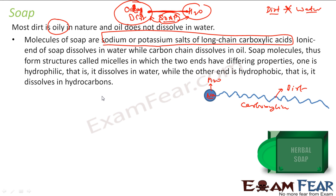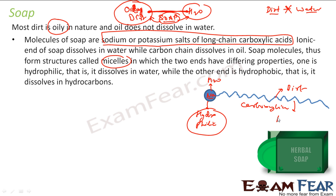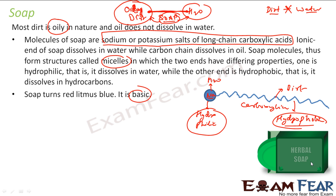The long chain takes care of dirt — this part dissolves in dirt. It forms a structure called micelles, which I'll explain when I explain the working of soap. If you see this molecule, it has two ends. One end is attracted towards water — we can call it hydrophilic, meaning the one that loves water. The other end is hydrophobic — it hates water. Hydrophobic means fear of water, hydrophilic means love of water. So the hydrophobic end dissolves in hydrocarbons, i.e., oily dirt.